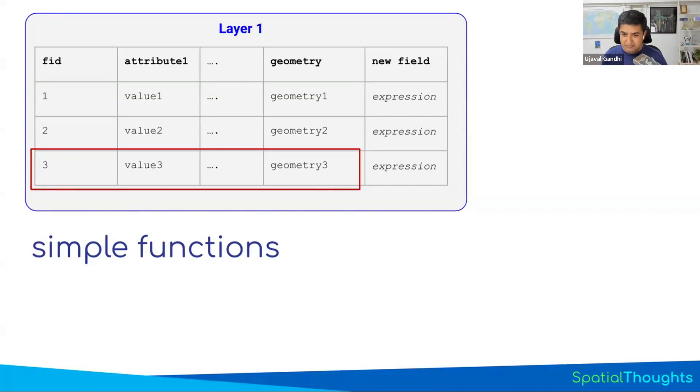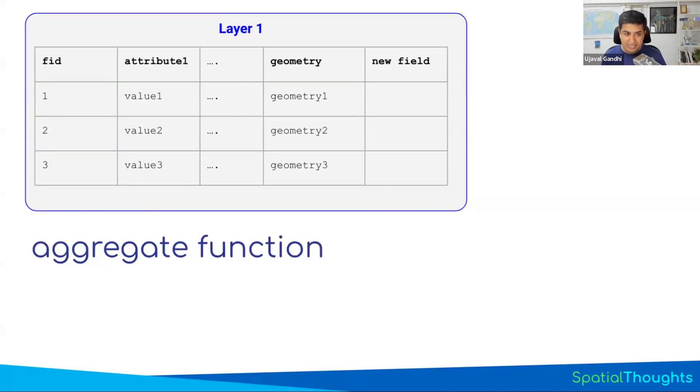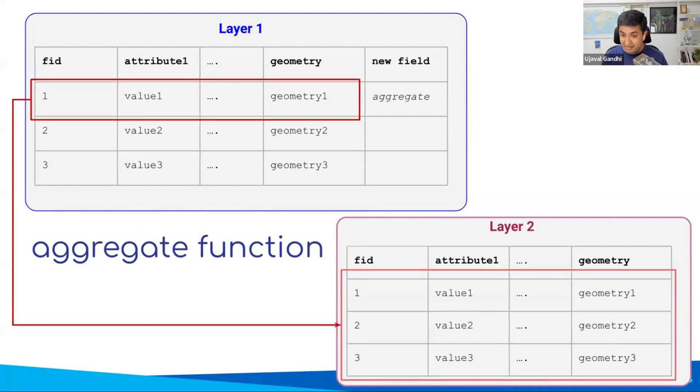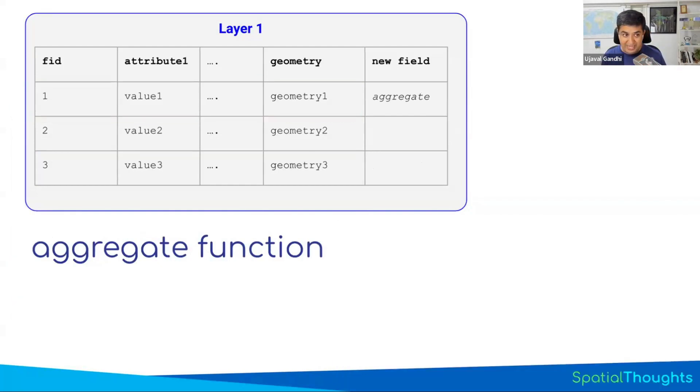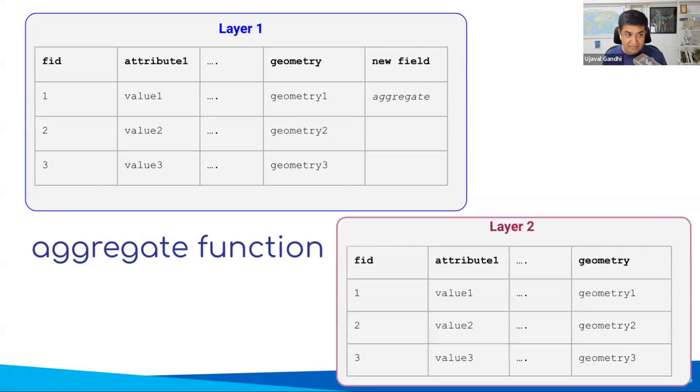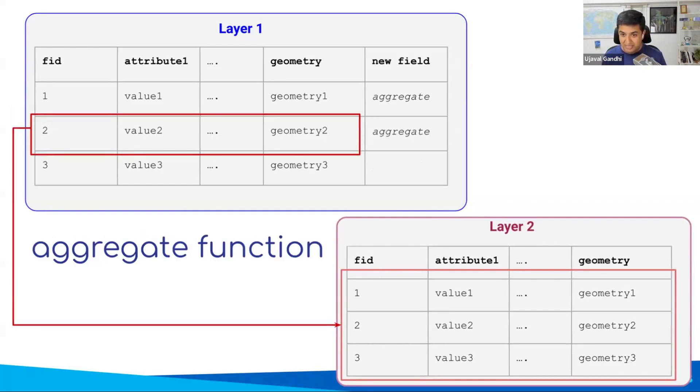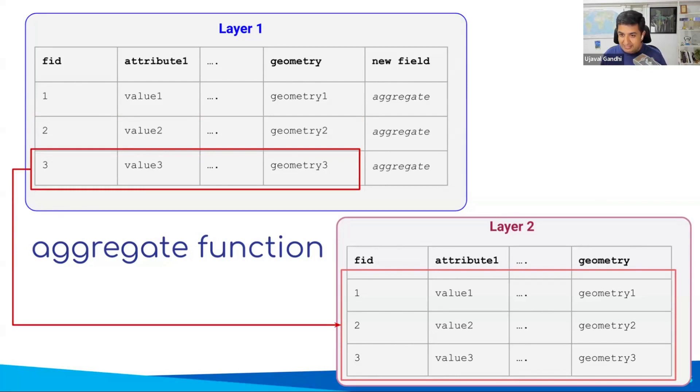But if you look at the aggregate function, it is able to look at an entire another layer alongside the current feature and the attributes and geometry of the current feature. An aggregate function, if you write an aggregate function for a feature, it can look at the attribute and the geometry of the current feature alongside an entire another layer. And this opens up a lot of possibilities, because if you think about what's happening here, this is the whole domain of spatial analysis. All of GIS is essentially looking at multiple layers and evaluating the spatial relationship. That means now your expressions can do GIS within this expression.